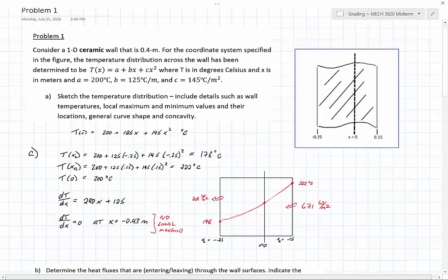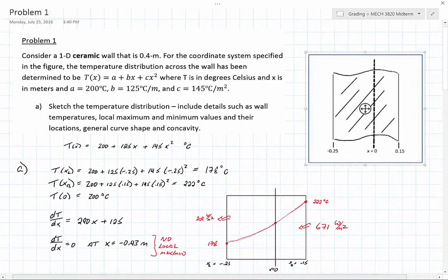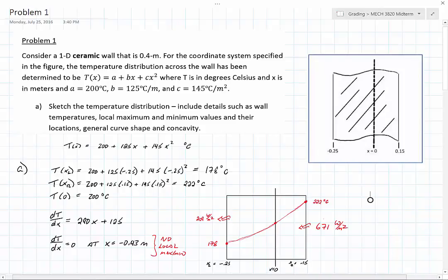We have a multi-step problem here where we are given a wall that has a left-hand coordinate at negative 0.25 meters and a right-hand coordinate of 0.15 meters for a total width of 0.4 meters. The wall is made of a ceramic, so we can go onto our tables and look up values such as the thermal conductivity of that material.